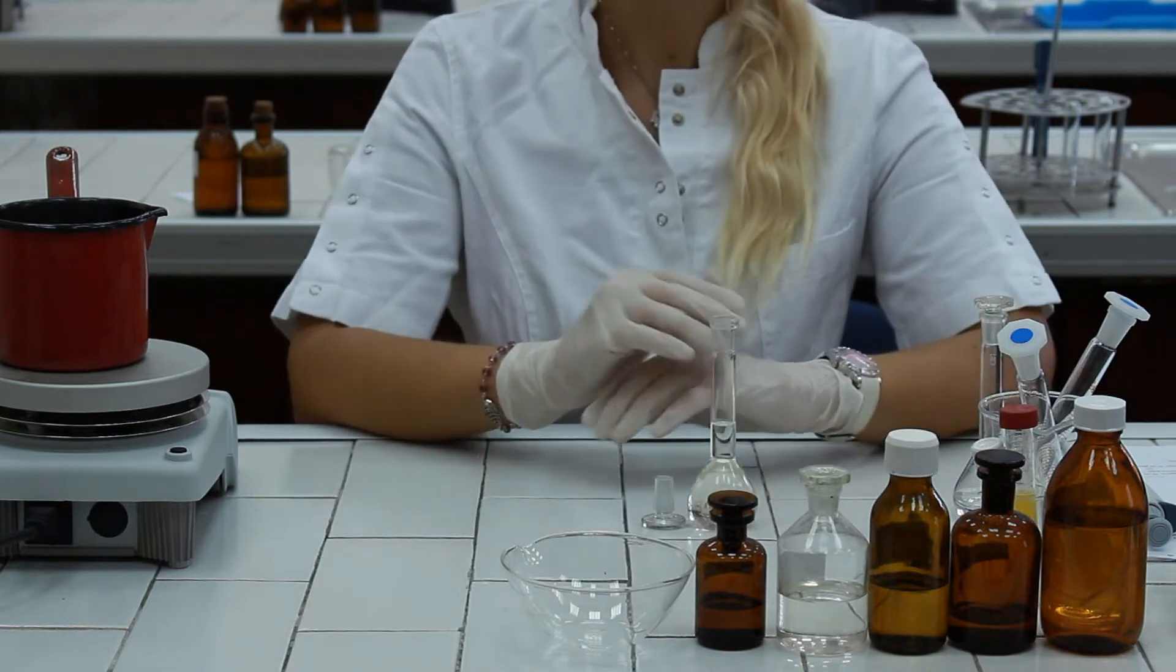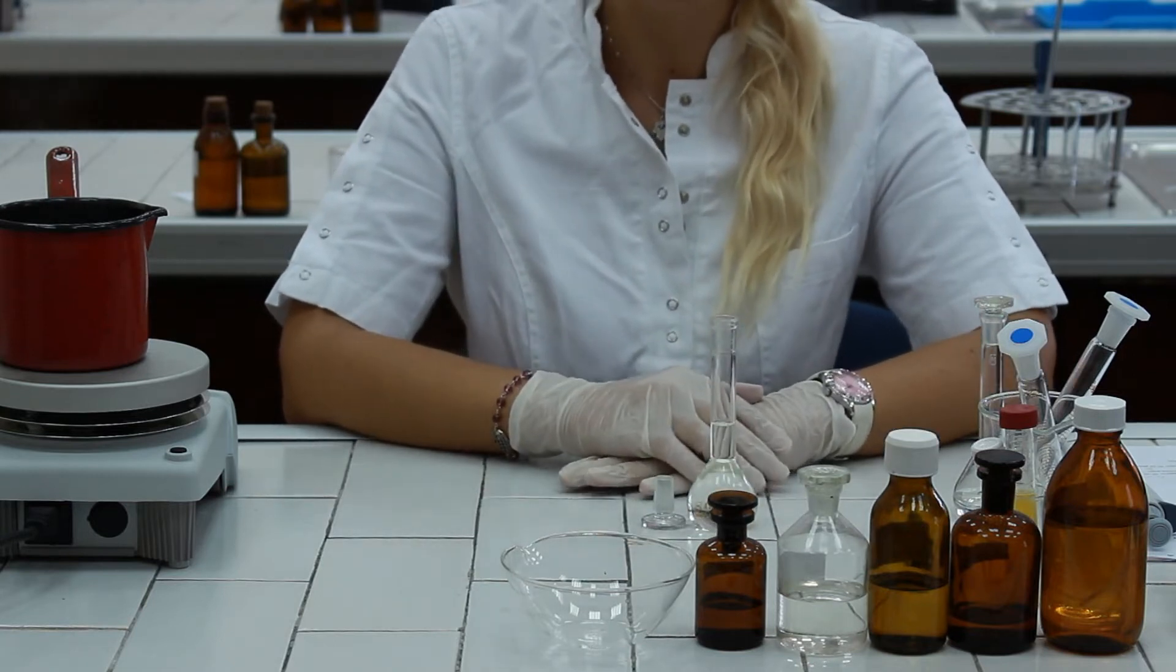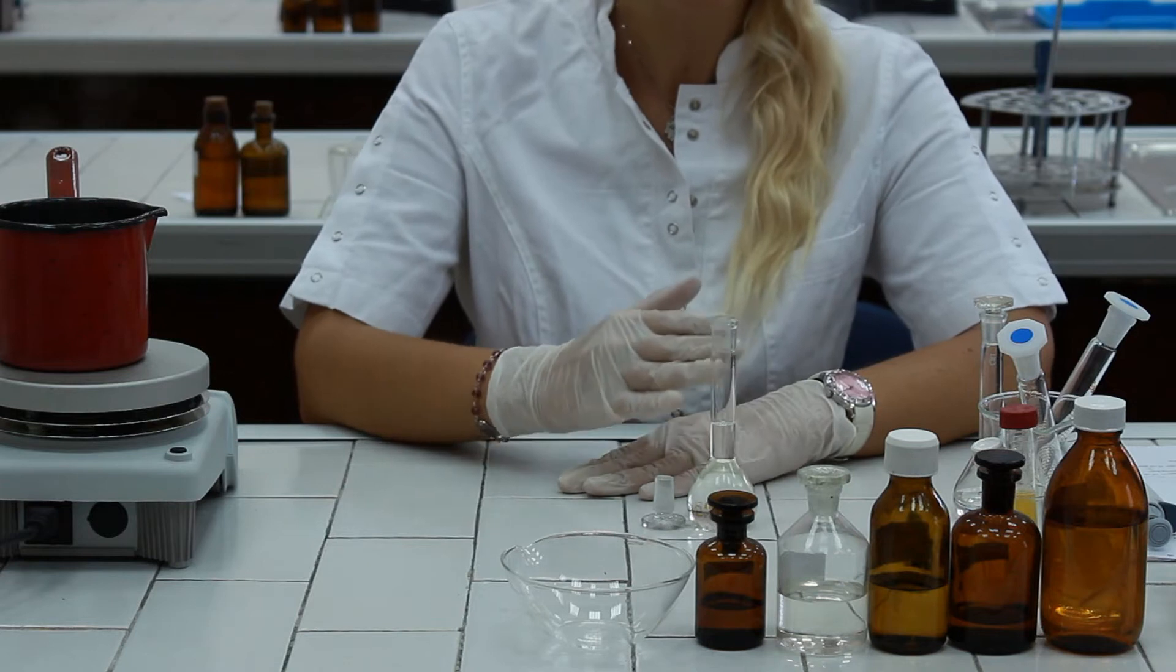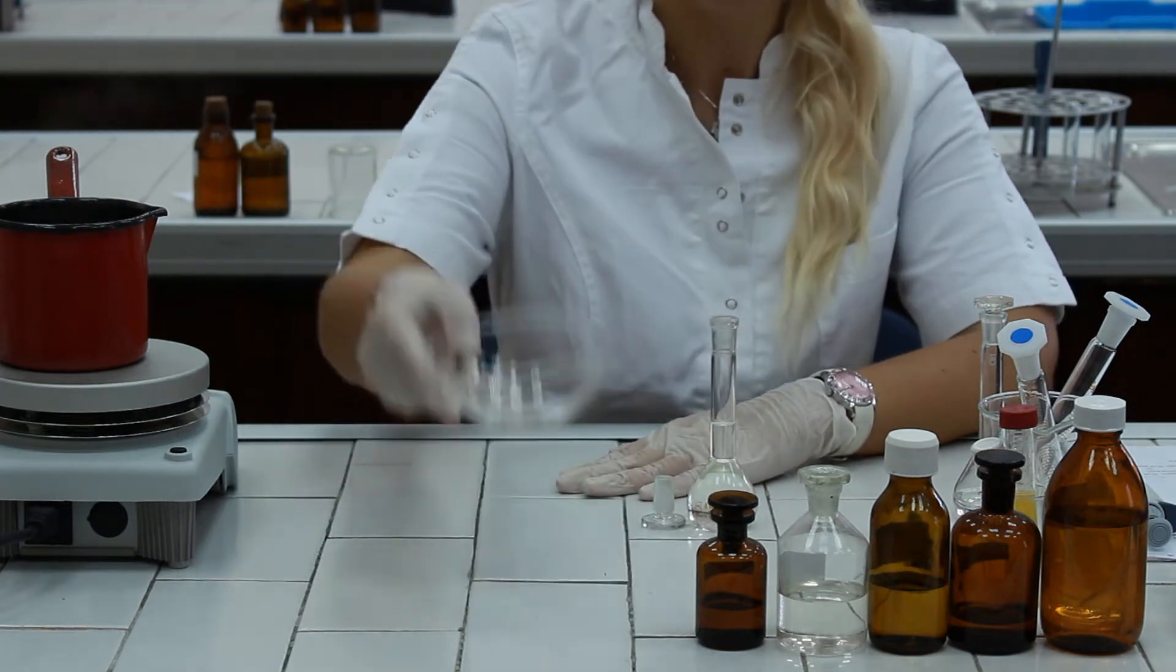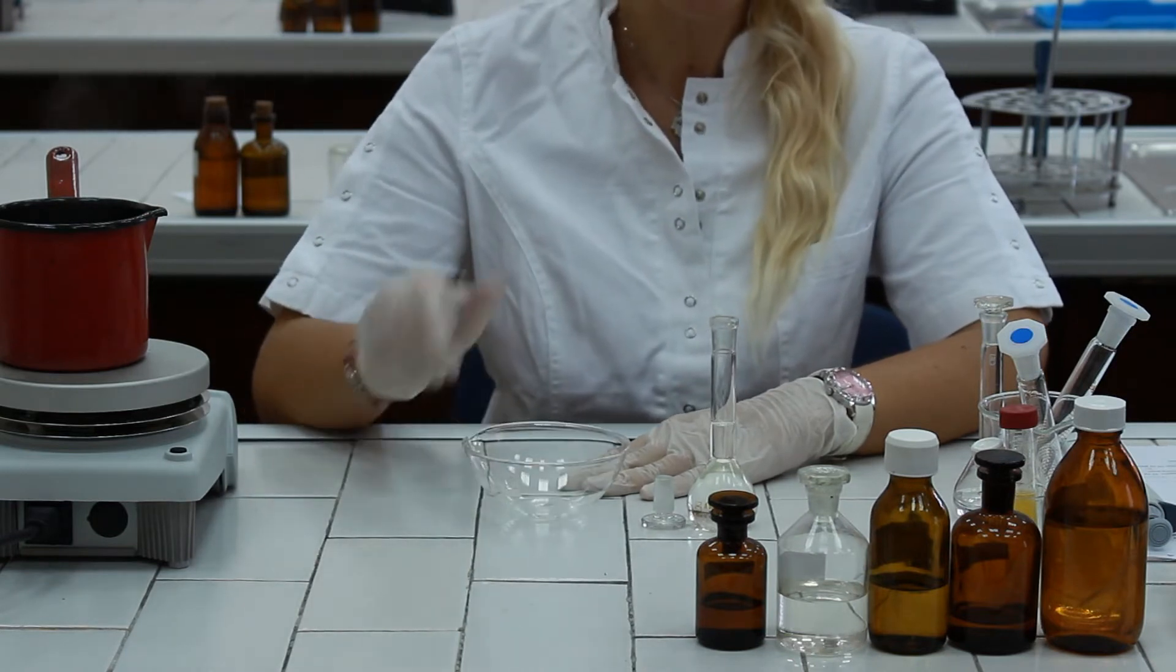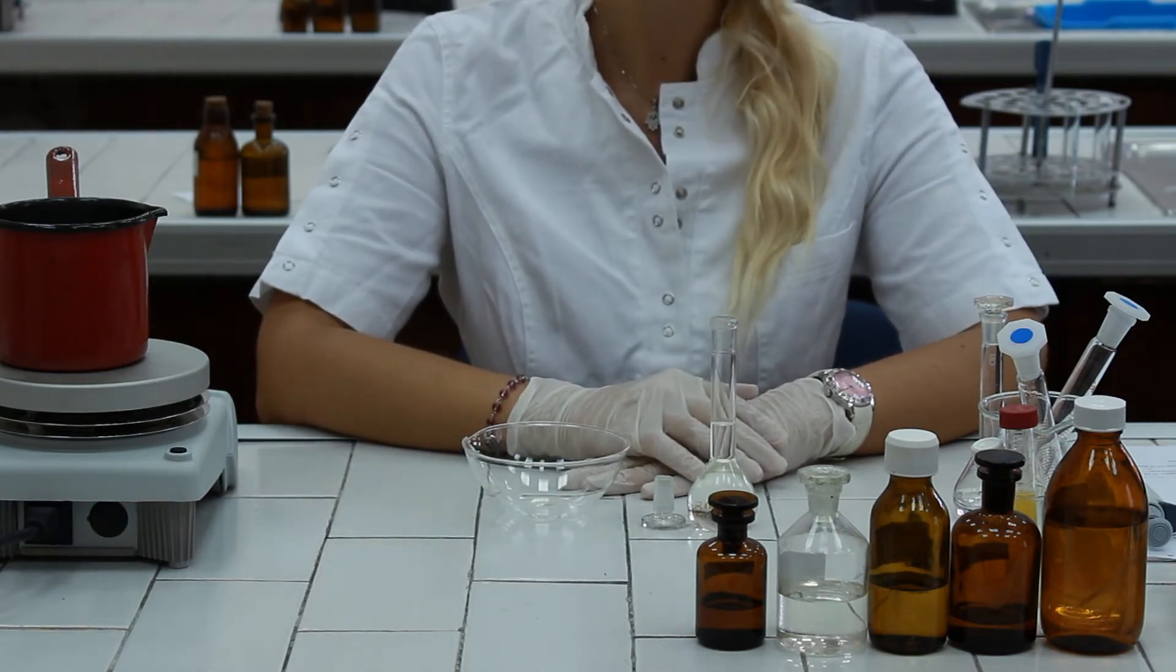Now we have to prepare the chloroform solution of our cholesterol, so first we have to remove ether and ethanol from the mixture. In order to do that we are going to take an evaporating dish and pipette the aliquot of 10 milliliters of ether-ethanol solution of cholesterol.